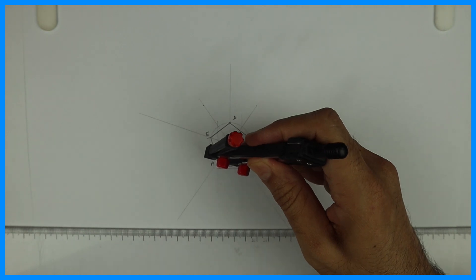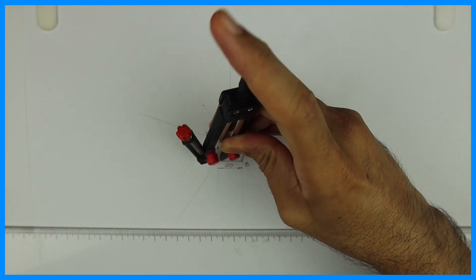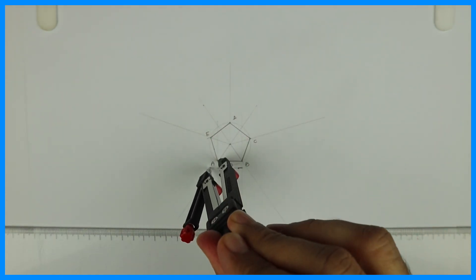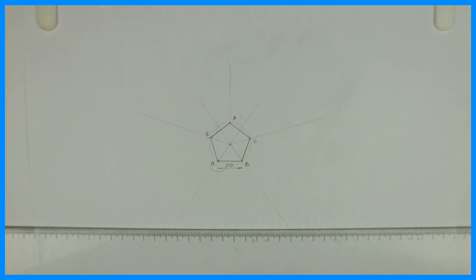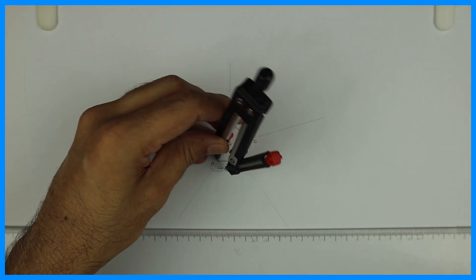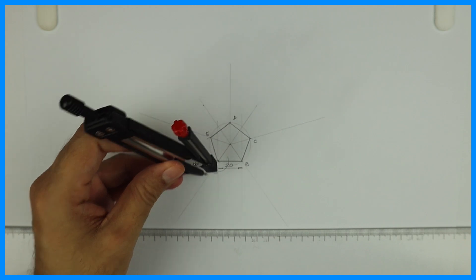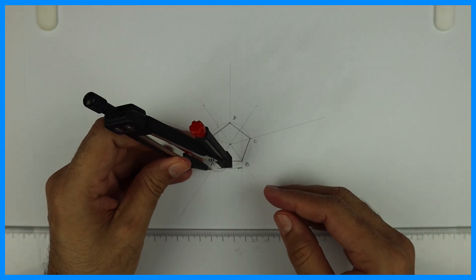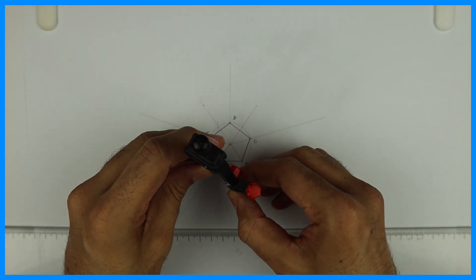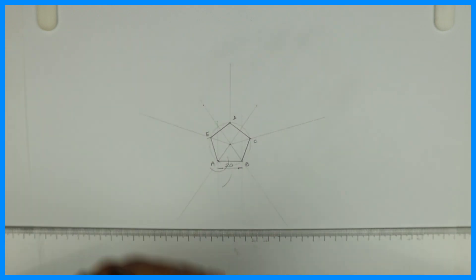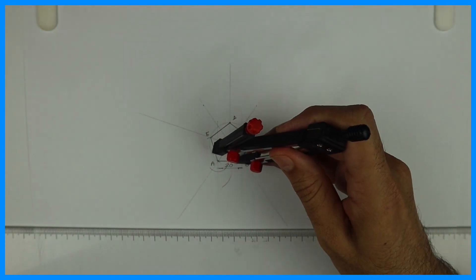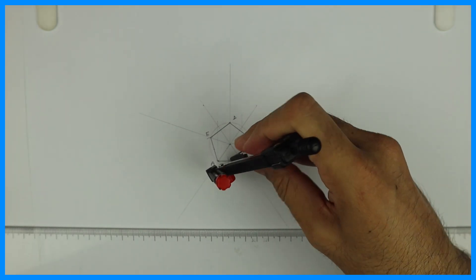Now we need to bisect this exterior angle, outside angle. We need to bisect because we want circle outside the pentagon. Remember that whenever you want to draw circle outside the pentagon, bisect outside angle. So in this case we are bisecting this